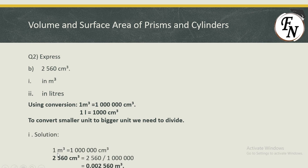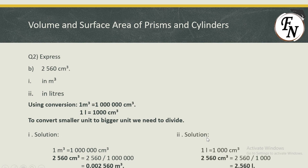For converting to meter cube: 2,560 centimeter cube is divided by 1,000,000, because we are converting smaller unit to bigger unit. After division we get 0.002560 meter cube. For converting into liters, using 1 liter equals 1,000 centimeter cube, 2,560 cm³ is divided by 1,000 — again smaller to bigger unit — and after division we have got 2.560 liters.